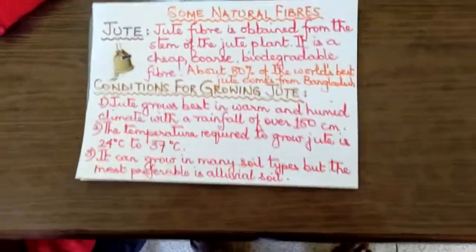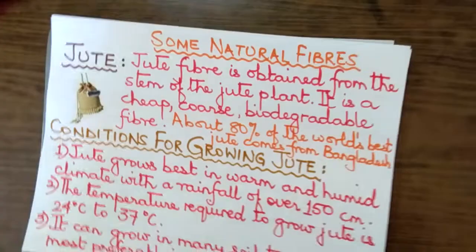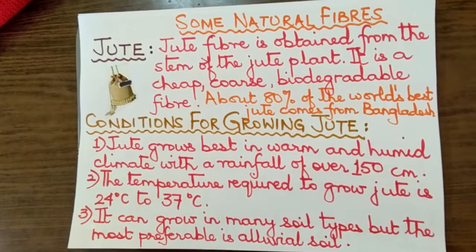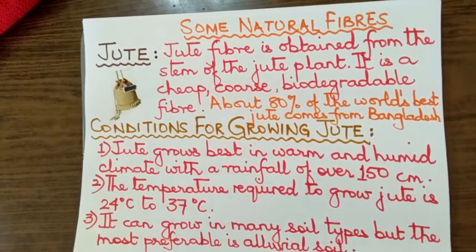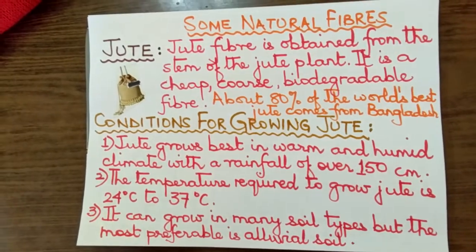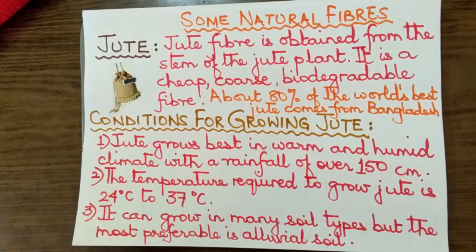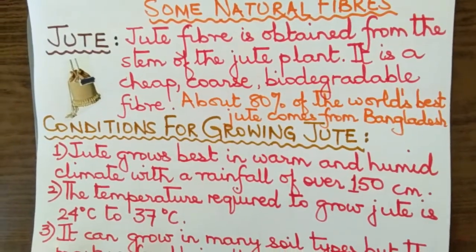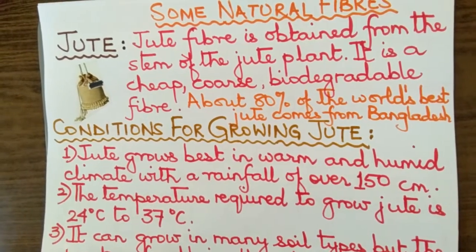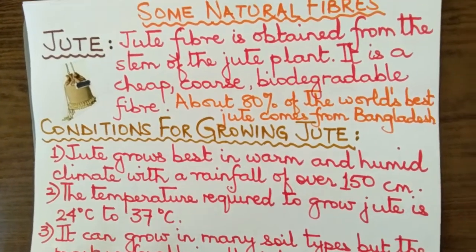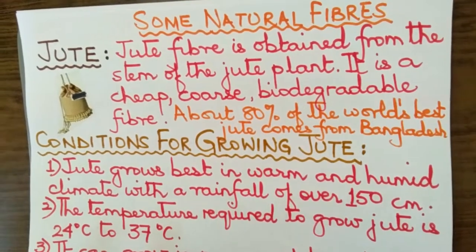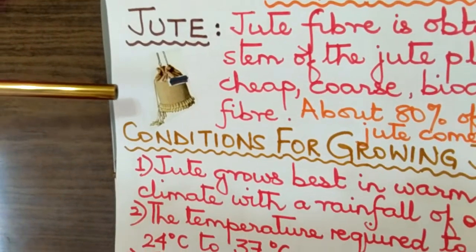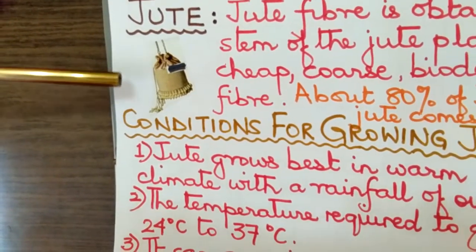You are going to learn about the advantages of natural and synthetic fibers at a later class. Now let us learn about some natural fibers such as jute. Jute fiber is obtained from the stem of the jute plant. It is a cheap, coarse, biodegradable fiber. You can see this bag made out of jute fiber — it is a very decorative and unique bag.